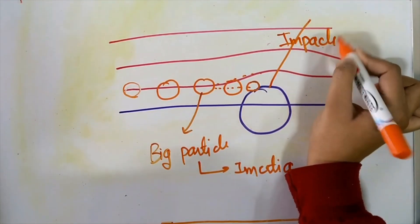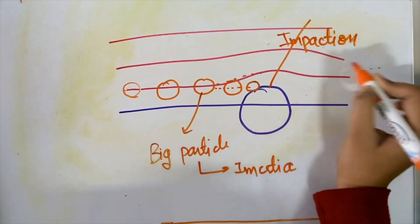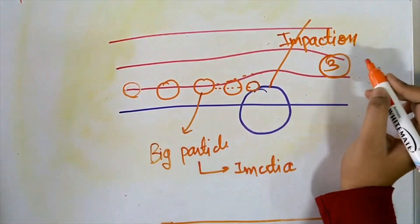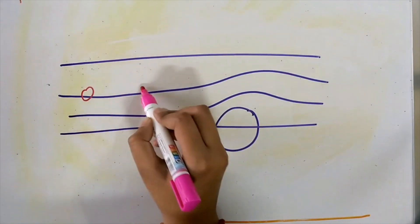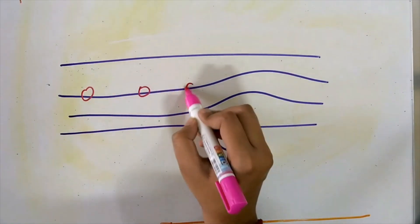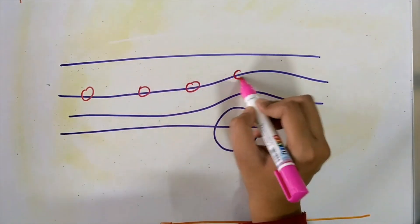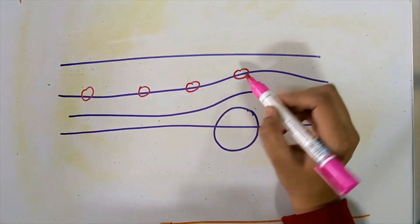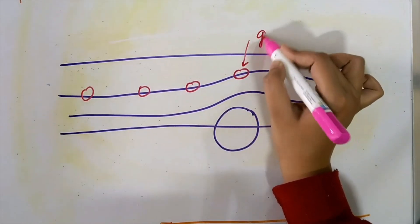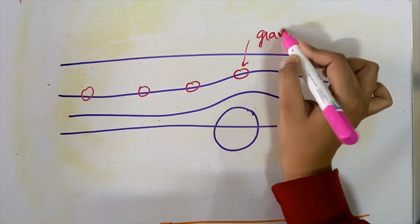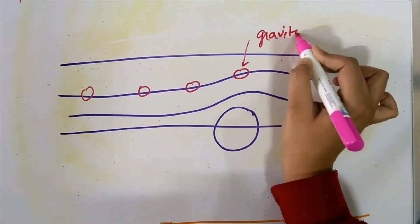Next, your particle is moving and is somewhere here. But if it is large enough, it will settle because of gravity and collide with the fiber. This is known as settling.